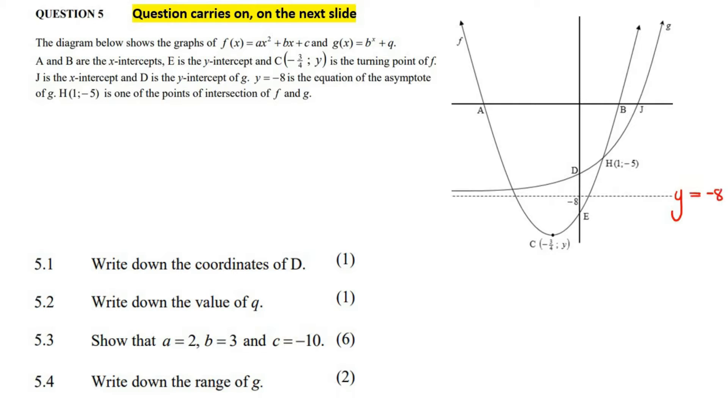That helps us with the exponential asymptote. H, which is 1 and minus 5, is the point of intersection.